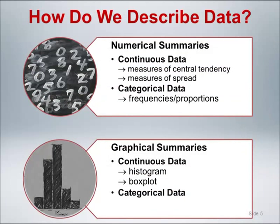How do we actually perform a descriptive analysis? The two primary classification categories of descriptive summaries are numerical and graphical. Within each of those categories, we can subclassify descriptive summaries as those intended for continuous data and those intended for categorical data. For numerical summaries of continuous data, such as systolic blood pressure values, we will describe several summary measures intended to characterize the central tendency — mean and median — and the amount of spread — standard deviation and interquartile range. For categorical data, such as gender or BMI category, we will use counts or frequencies and percentages. For graphical summaries, we will focus on graphs for continuous data and introduce two commonly used summaries: the histogram and box plot.